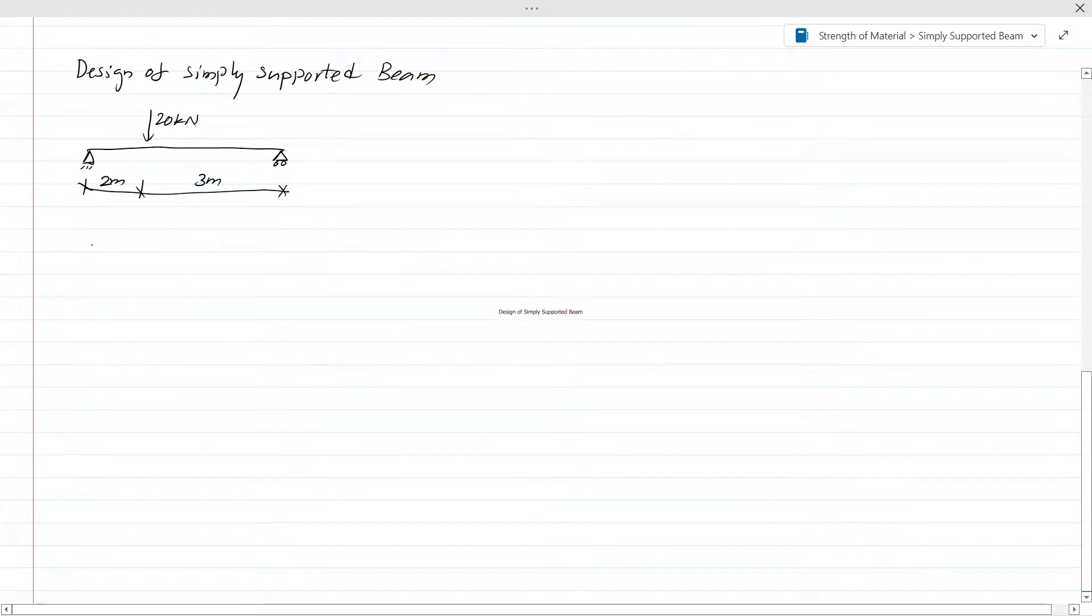We are going to discuss the design of a simply supported beam. In this example, we have a beam with a 5m span and a point load of 20kN. Let's start calculating the bending moment and shear force.